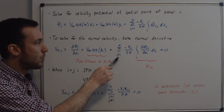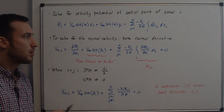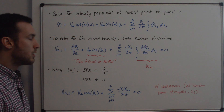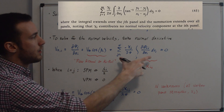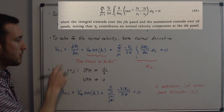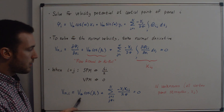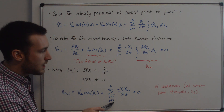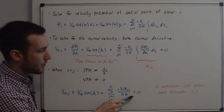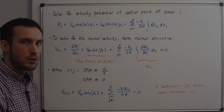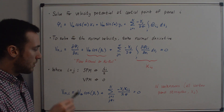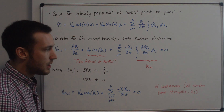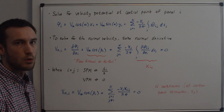At some point in the summation we will get to the point where i equals j. For the source panel method, when i equals j, the value of the entire summation term was equal to lambda_i over 2. For the vortex panel method, when i equals j, this whole thing equals 0. So we can rewrite the equation as: the normal velocity on the i-th panel equals the uniform flow term plus the summation from j equals 1 to n when j does not equal i. This equals 0 because we have no flow into or out of the airfoil. This gives us n unknowns — the gamma_j's, the vortex panel strengths we're solving for.